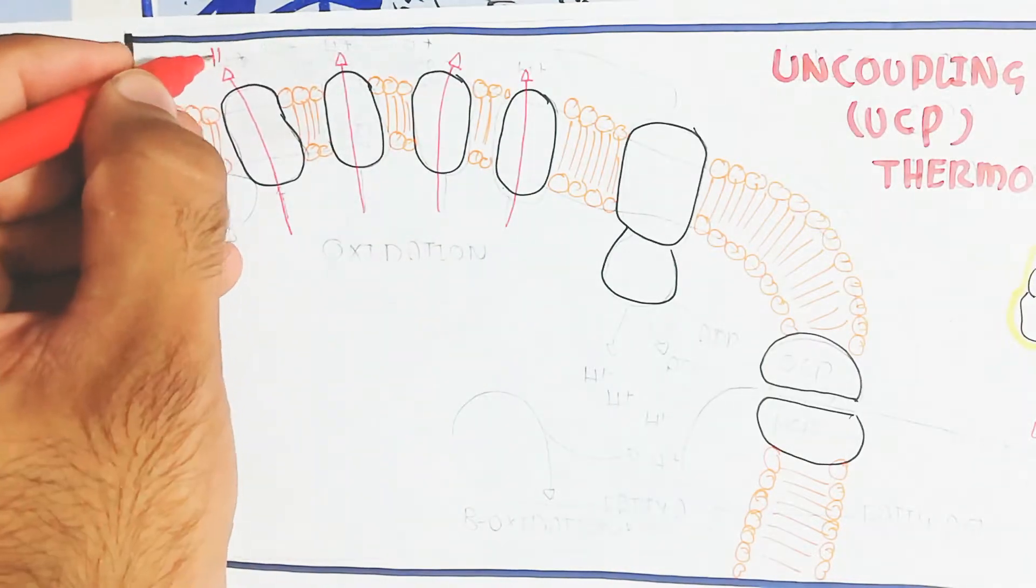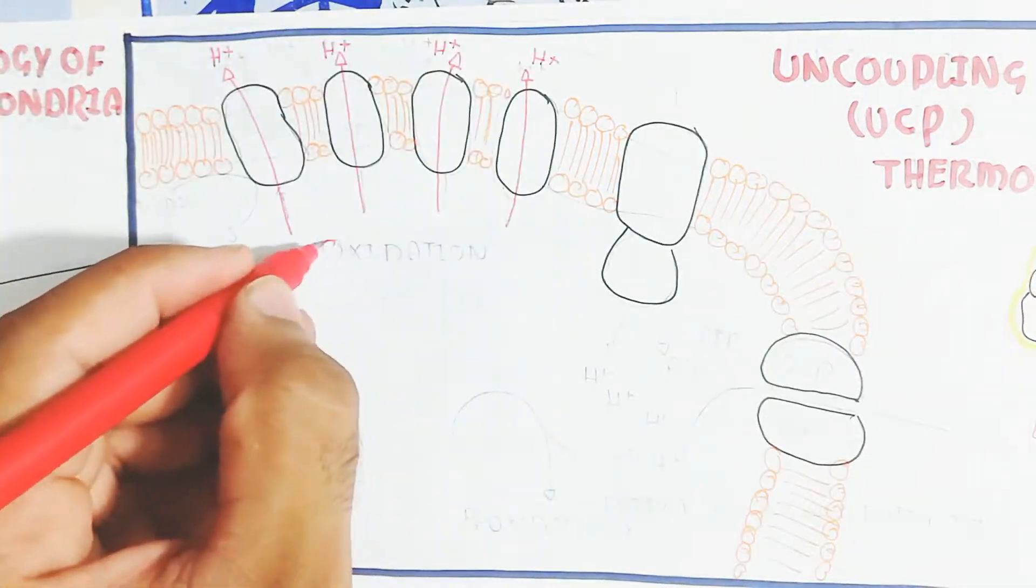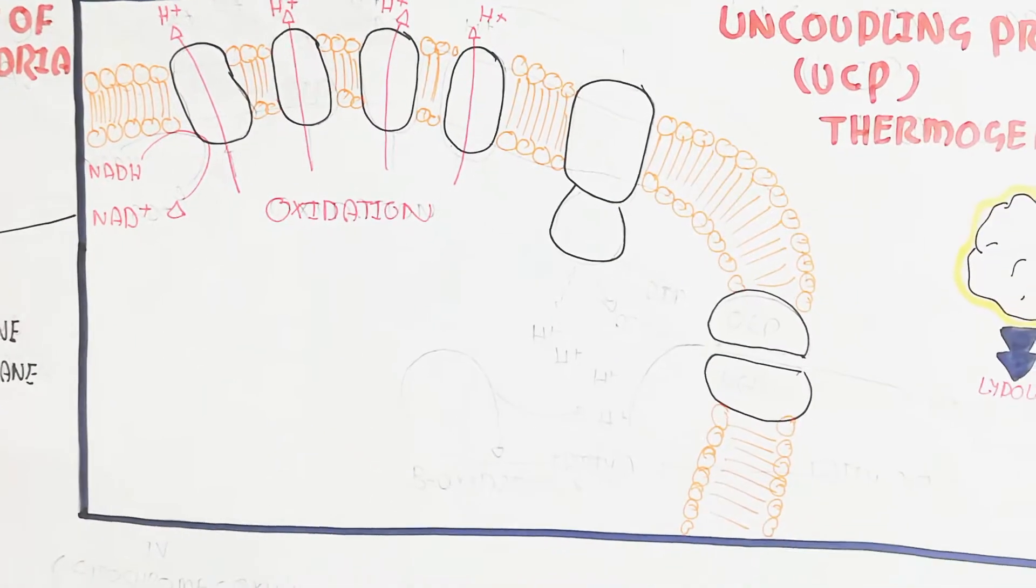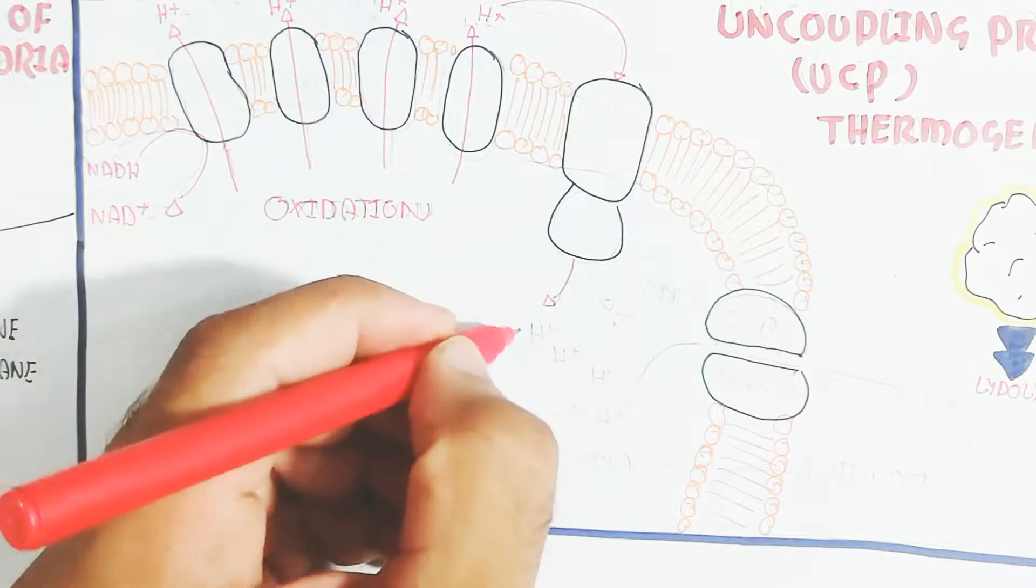And the beta oxidation produces more protons which pump out to also produce heat. In this case, damage can occur to the mitochondria from reactive oxygen species.